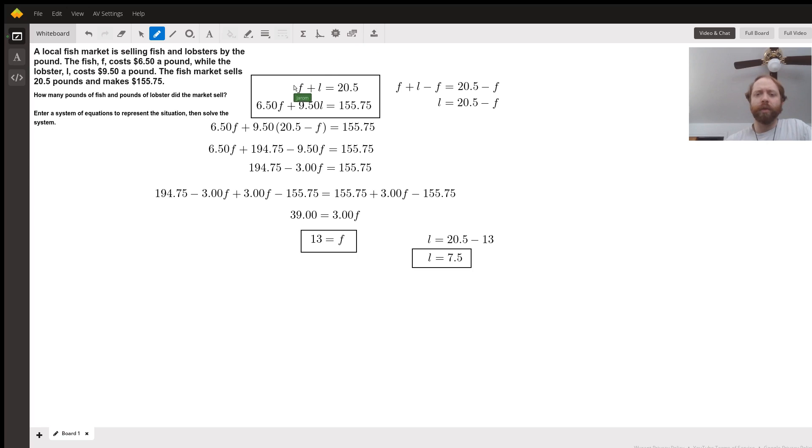So our first equation here is F to represent the number of pounds of fish plus L, the number of pounds of lobster, equals 20.5 because a total of 20.5 pounds sold. And then $6.50 times F plus $9.50 times L equals $155.75. So there's our system of equations. That's the first half of the problem done right there.